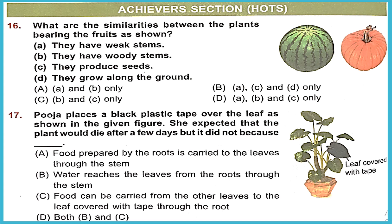Question 16: What are the similarities between the plants bearing watermelon and pumpkin? Both plants are creepers — they have weak stems and grow along the ground. Both plants bear flowers, which means they also produce seeds. Options — they have weak stems (correct), they produce seeds (correct), they grow along the ground (correct). A, C, D are correct, so the answer is option B.